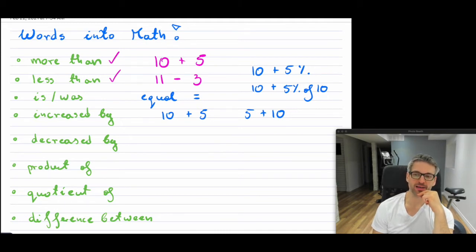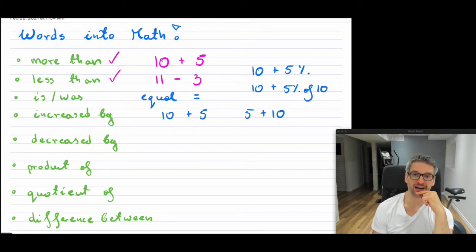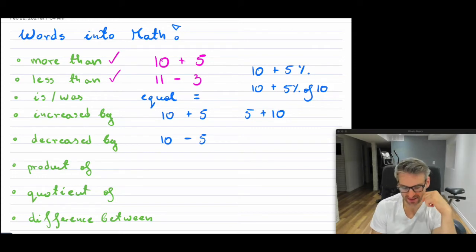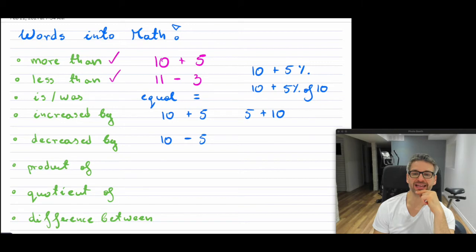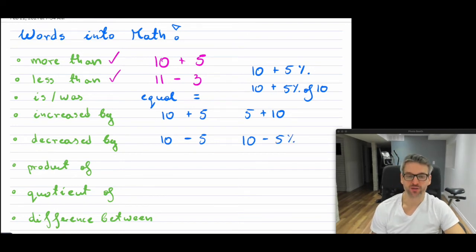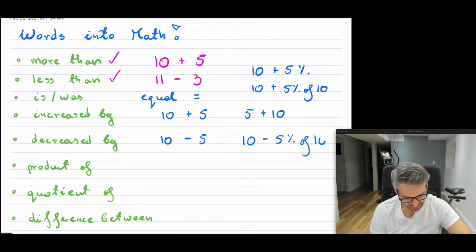Now, "decreased by." So if you say "ten decreased by five," decreased means you are subtracting — it is ten minus five. But if you say "ten is decreased by five percent," again be careful how you write this. You cannot just write ten minus five percent. You would have to write it as ten minus 0.05 times ten, because it's five percent of the original ten.